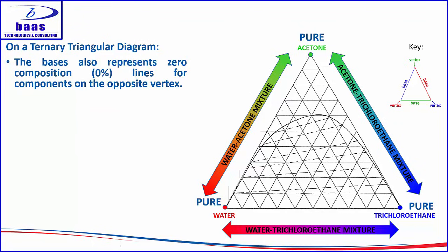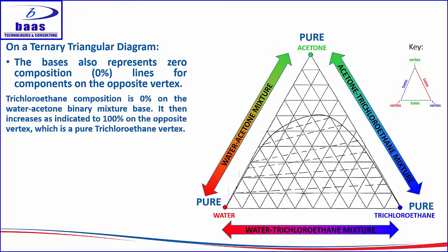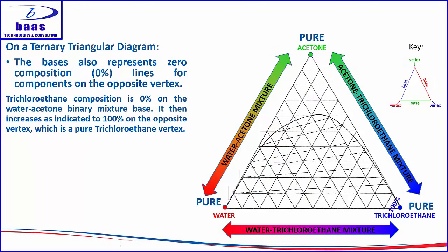The bases also represent zero composition lines for the component on the opposite vertex. The water-acetone binary base represents a zero percent composition line for trichloroethane, which sits on the opposite vertex. As you move with lines parallel to that base towards the vertex, the composition of trichloroethane increases from zero to ten percent, fifty percent, eighty percent, all the way to one hundred percent at the vertex.